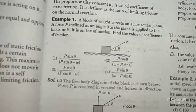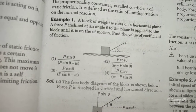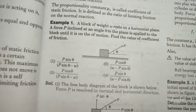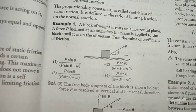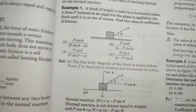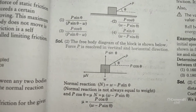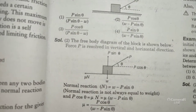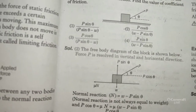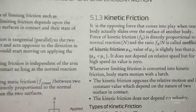The normal reaction R: since P sinθ acts upward alongside R, we get R + P sinθ = W, so R = W − P sinθ. Therefore, μ = P cosθ / (W − P sinθ). This is the answer using components. This is the standard form for limiting friction problems.